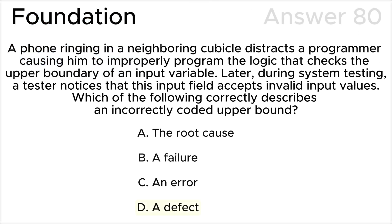The correct answer is D, a defect. The problem in the code is a defect, according to the ISTQB glossary and ISTQB syllabus. The distraction leading to incorrect coding results in a defect, which is the improperly coded upper bound logic.